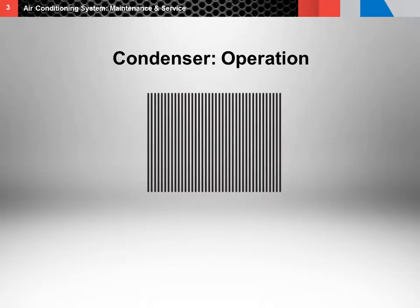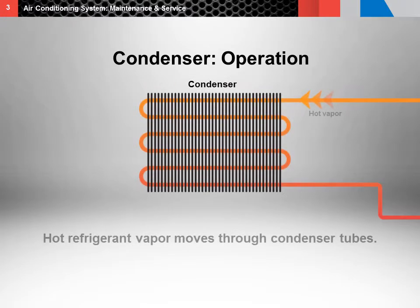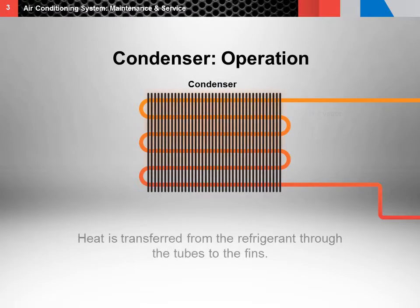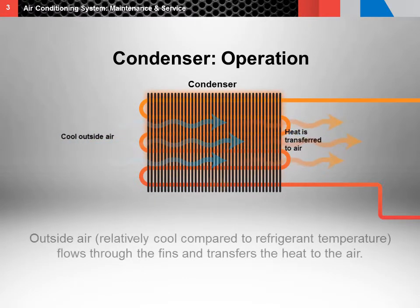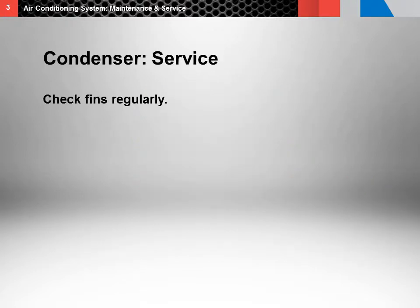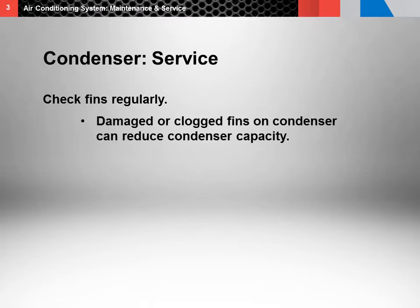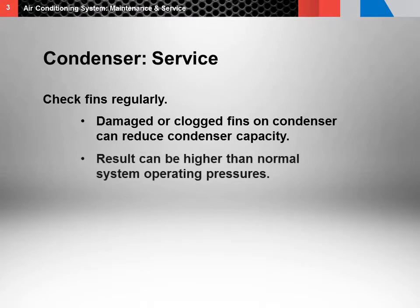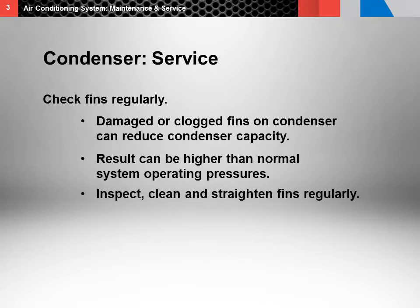The next component to look at is the condenser. The condenser is like a radiator for refrigerant. The hot refrigerant vapor travels through the condenser tubes and heat is transferred from the refrigerant to the fins. Then, as the cool outside air flows past the fins, heat is transferred to the air. The vapor is cooled and condensed and turns into liquid. Damaged or clogged fins on the condenser can reduce condenser capacity, resulting in higher than normal system operating pressures. So it's important to inspect, clean and straighten the condenser fins on a regular basis.